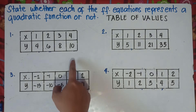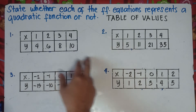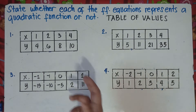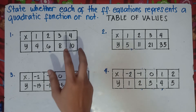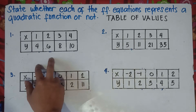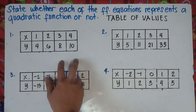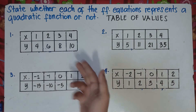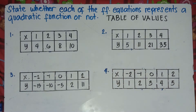What do we mean by that? When you get the first difference of y, you subtract the y values from right to left. If all the first differences are the same, that function is a linear function — not a quadratic function. When the first differences are not the same, you subtract again to get the second difference. If the second differences are all the same, then that function is a quadratic function. Let me explain with an example.